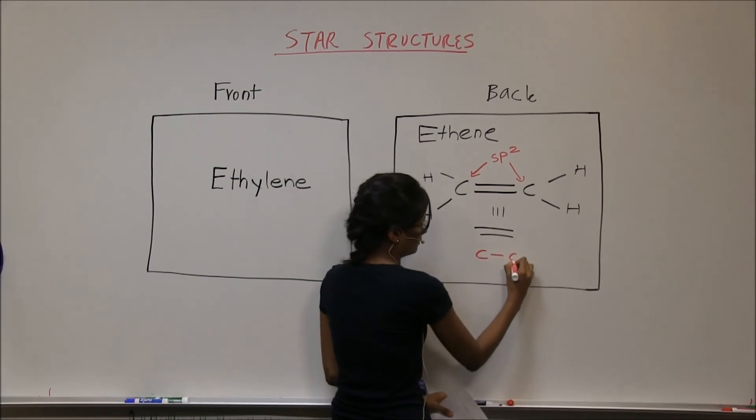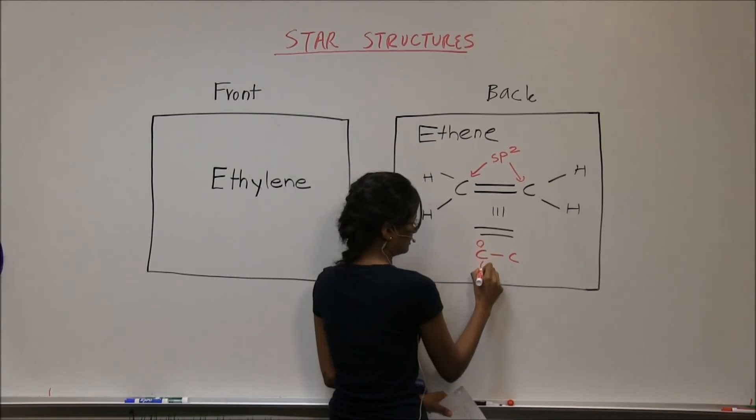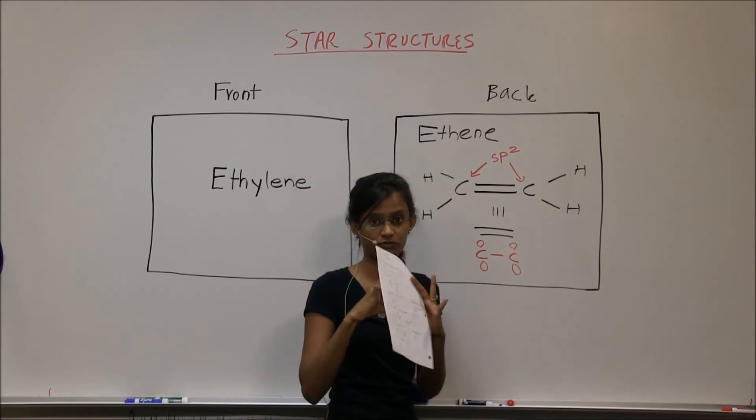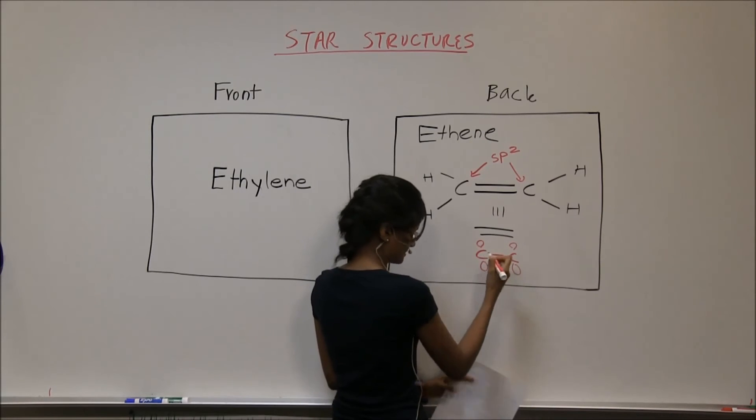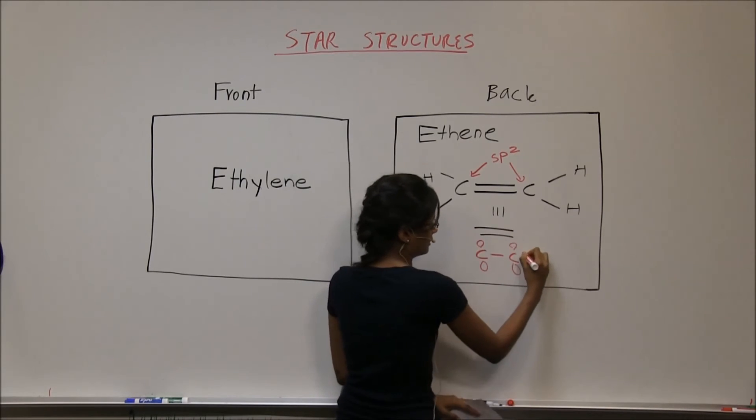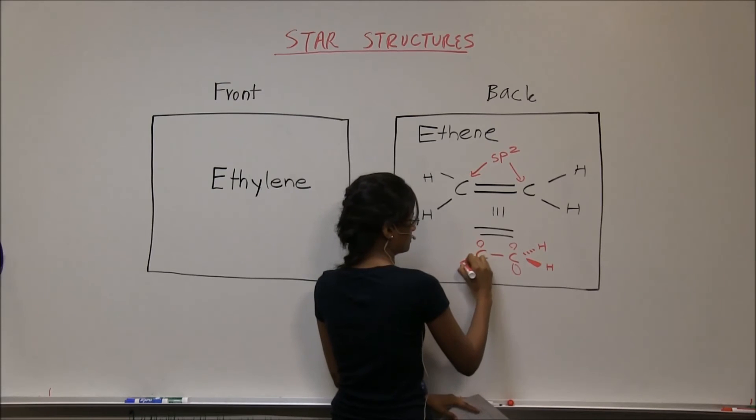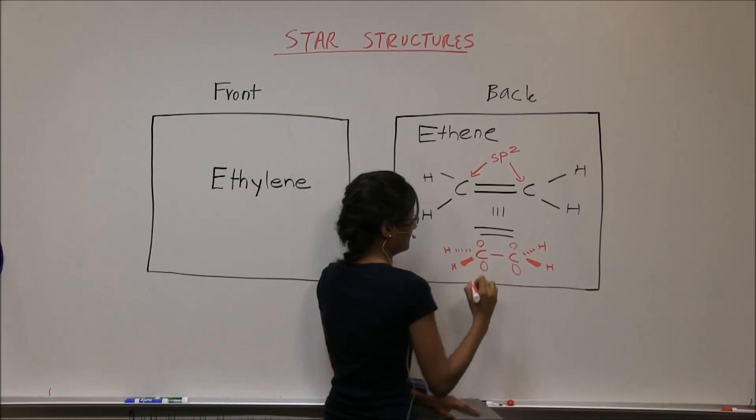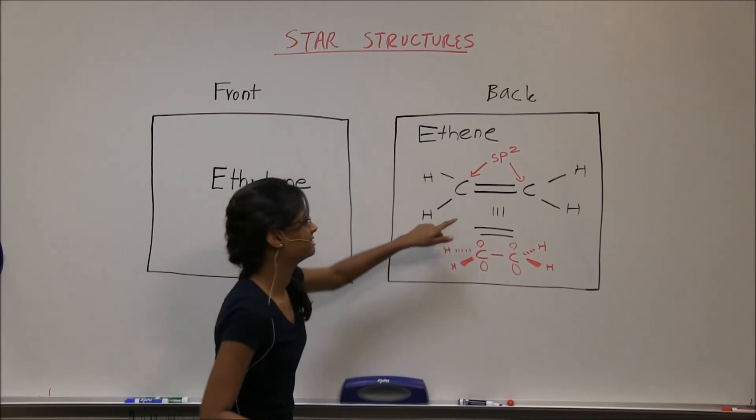Where we have one carbon, these are the p orbitals where the pi bond is overlapping. This is the sigma bond, and you have one hydrogen on a dash, the other hydrogen on a wedge.